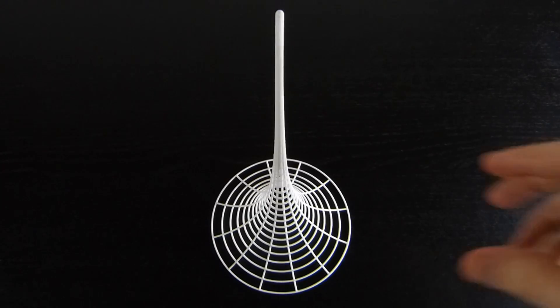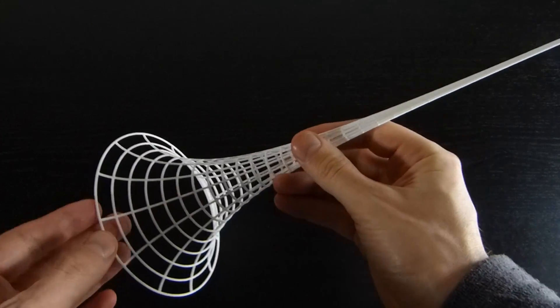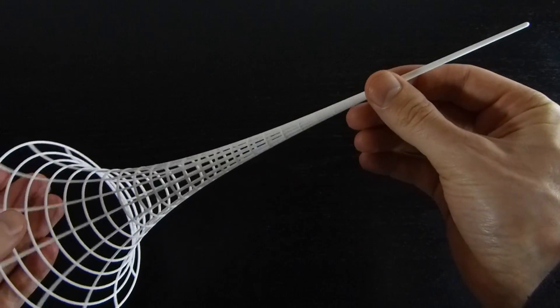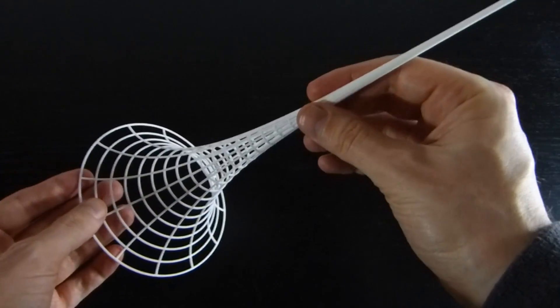Hi, my name is Henry Segemann. This is the Pseudosphere. As you might guess from its name, it's sort of like a sphere or maybe the opposite of a sphere. Let me explain why.